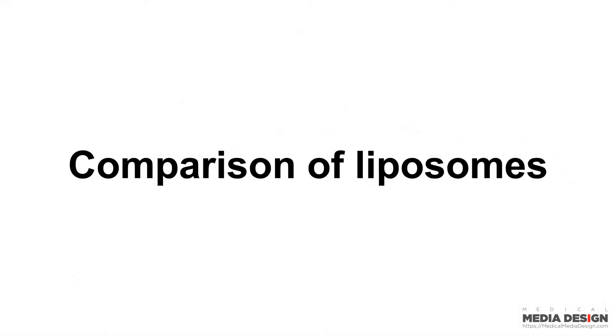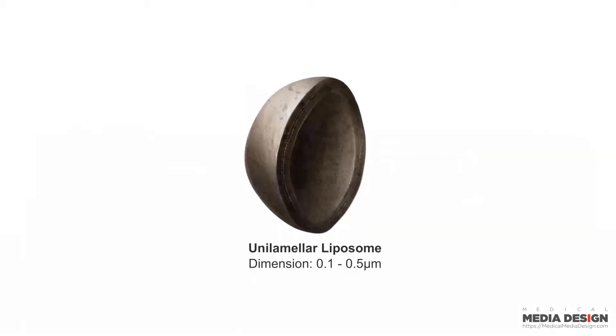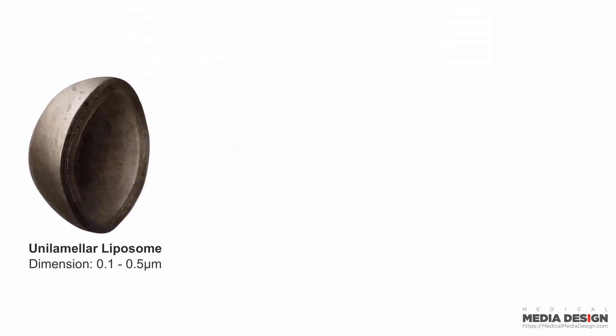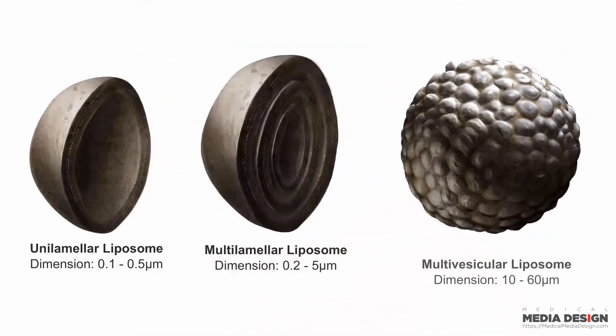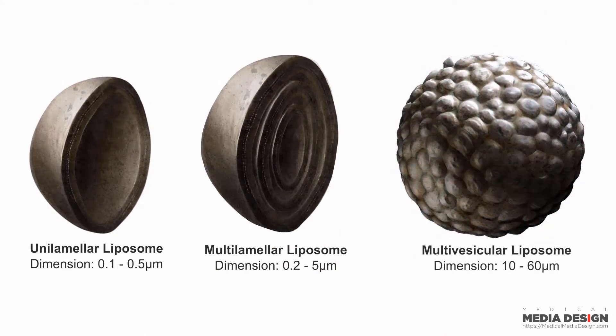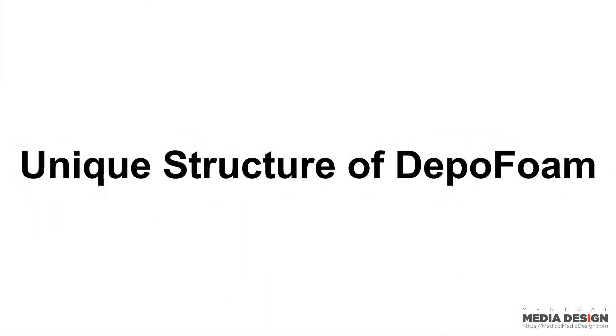There are several liposome forms that can occur synthetically or in nature. Unilamellar liposomes are composed of a single lipid bilayer surrounding an aqueous chamber, or multilamellar liposomes, which are composed of concentric bilayers. Multivesicular liposomes are composed of non-concentric lipid bilayers.